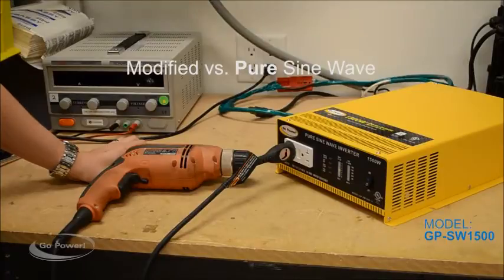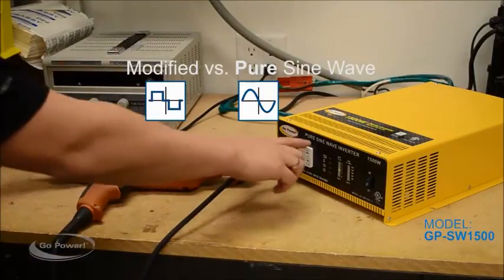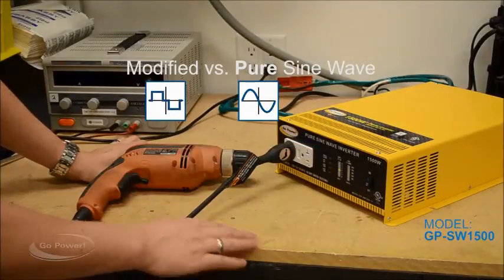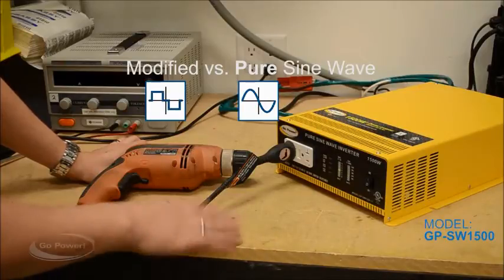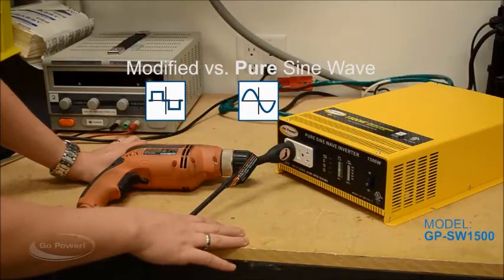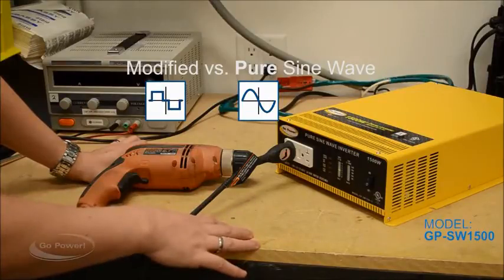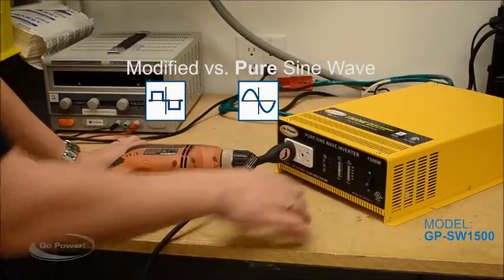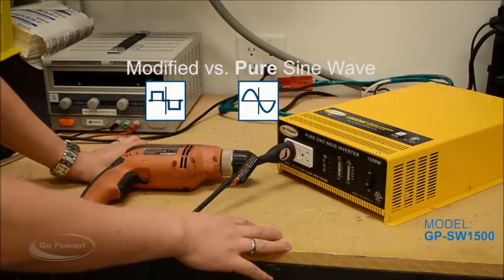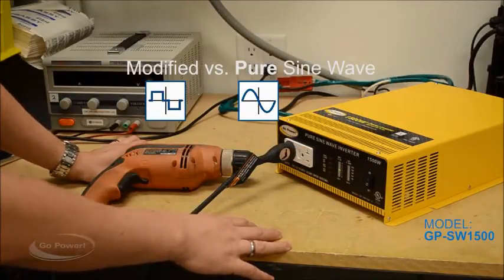A lot of people are asking what the difference between modified sine wave and pure sine wave inverters are. Well, for one, you're going to see there's a significant difference in cost. Modified sine wave is always much less expensive, but the difference is modified is not an exact replica of AC power, whereas a pure sine wave is an exact replica of what you get out of the wall socket at home.